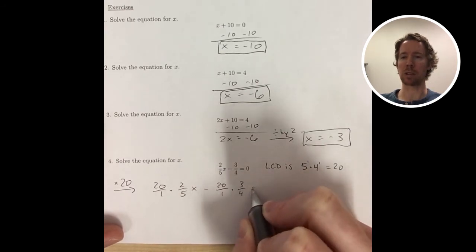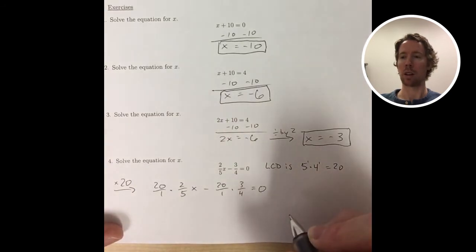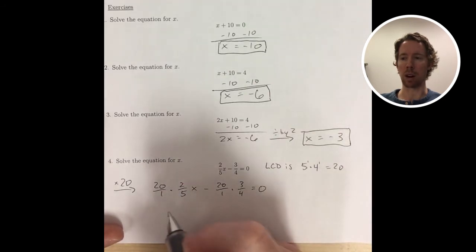When you multiply fractions, you multiply straight across. So I set up the 20 as 20 over 1, just to emphasize how we're multiplying straight across.